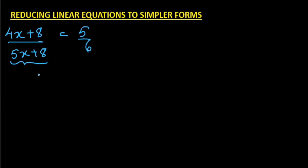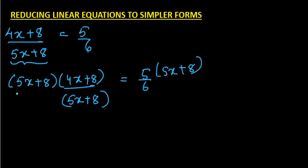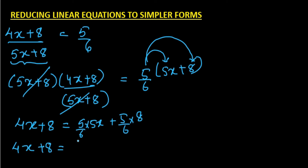To eliminate the denominator, we multiply both sides by (5x + 8) — its reciprocal — by the law of balancing. This cancels out, leaving 4x + 8 = (5/6)(5x + 8). Distributing 5/6, we get 4x + 8 = (25/6)x + 40/6.